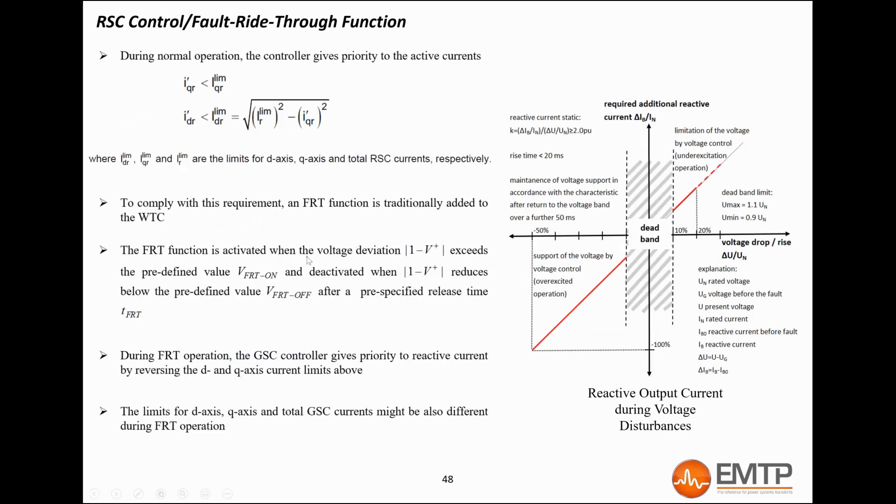Let's now explain the limiter device of the rotor-side converter. During normal operations, the controller gives the priority to the active current. The wind turbines are equipped with an FRT function to fulfill the grid code requirements regarding voltage support. The FRT function is activated when the voltage deviation is above a user-defined threshold, and is deactivated when the deviation goes back below another threshold. When the FRT function is active for LVRT or HVRT, the rotor-side controller gives the priority to the reactive current.